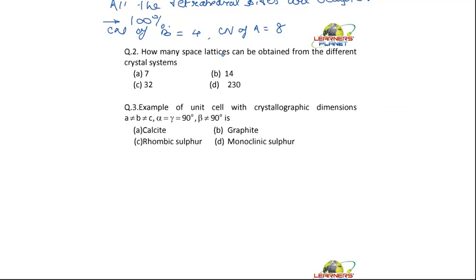What are those crystal systems? They are cubic, there is trigonal, tetragonal, orthorhombic, monoclinic, hexagonal, rhombohedral and triclinic.